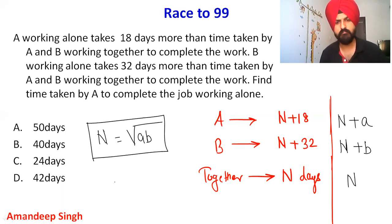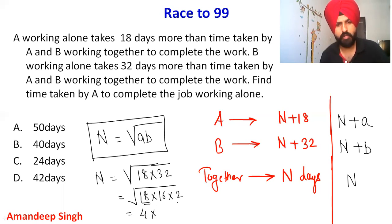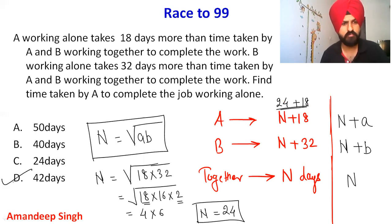I'm going to derive this formula in a moment. Applying it: N = √(18 × 32). We can rewrite 32 as 16 × 2, so we get √(18 × 16 × 2) = √(36 × 16) = 6 × 4 = 24. So together they take 24 days. A alone takes 24 + 18 = 42 days.